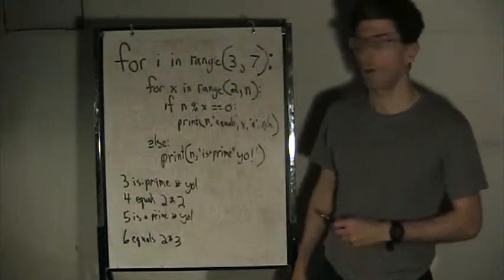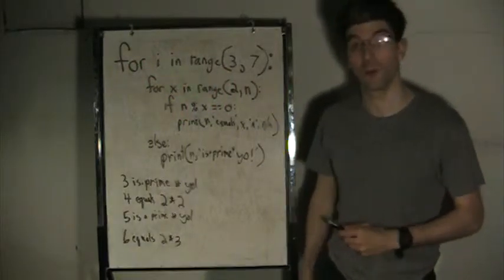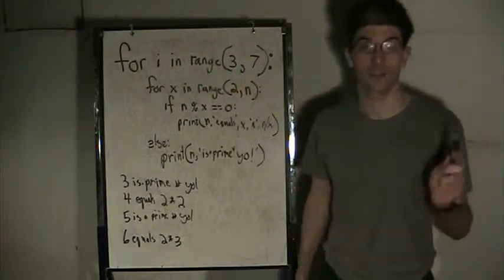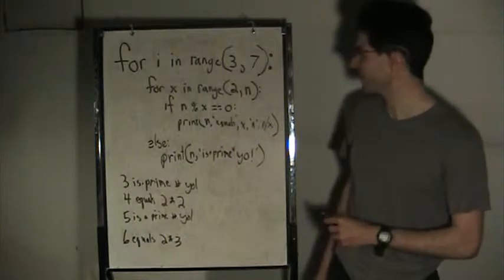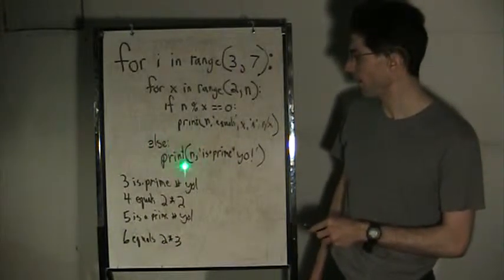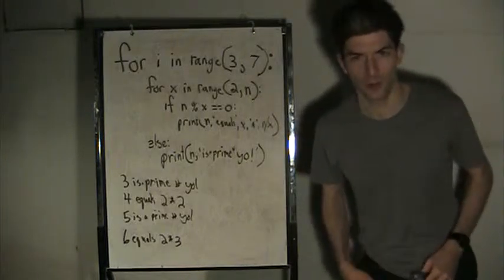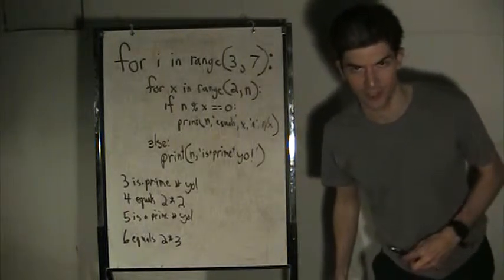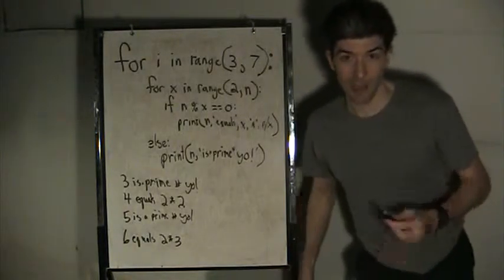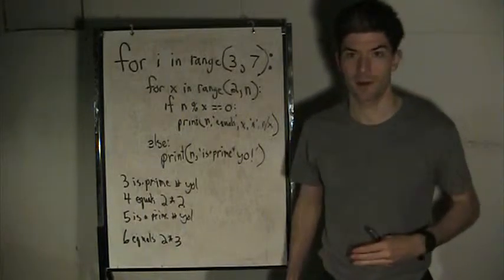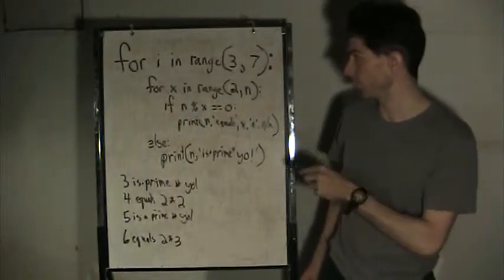...combining for loops, nested for loops, advanced embedded stuff with the range function that you just learned about. This is basically the Python coded version of the Sieve of Eratosthenes, which is a mathematical sieve that allows you to identify prime numbers meticulously with loops.